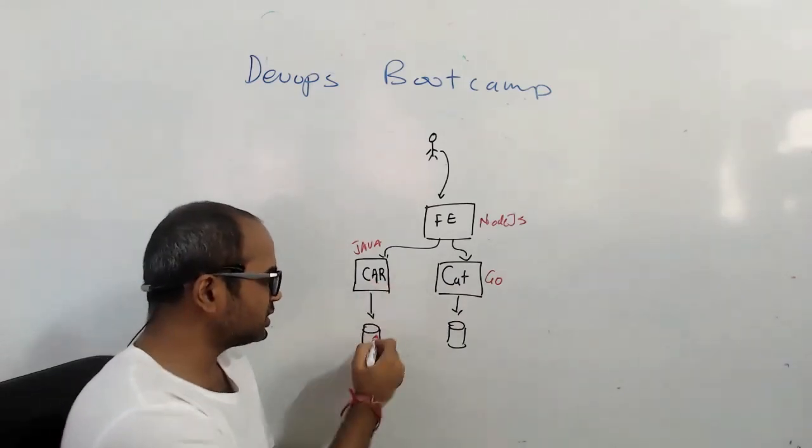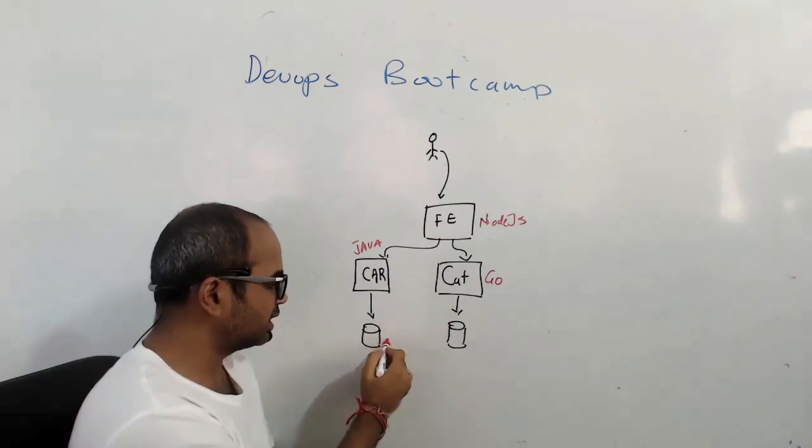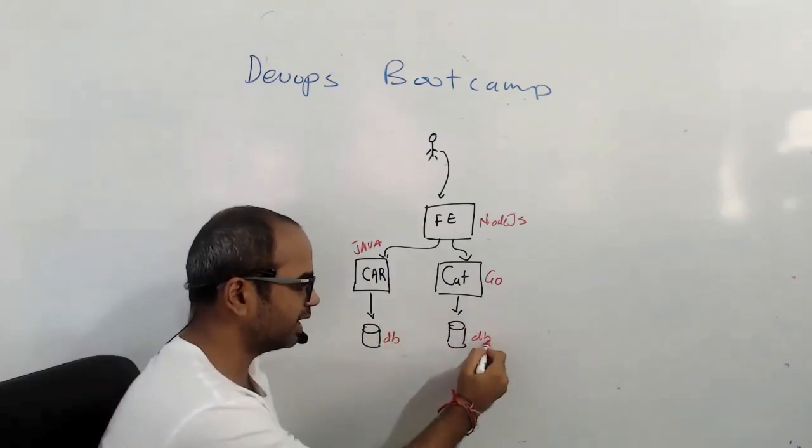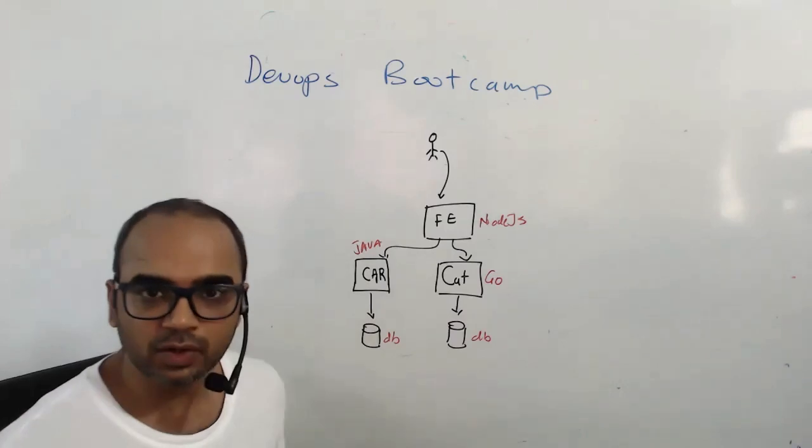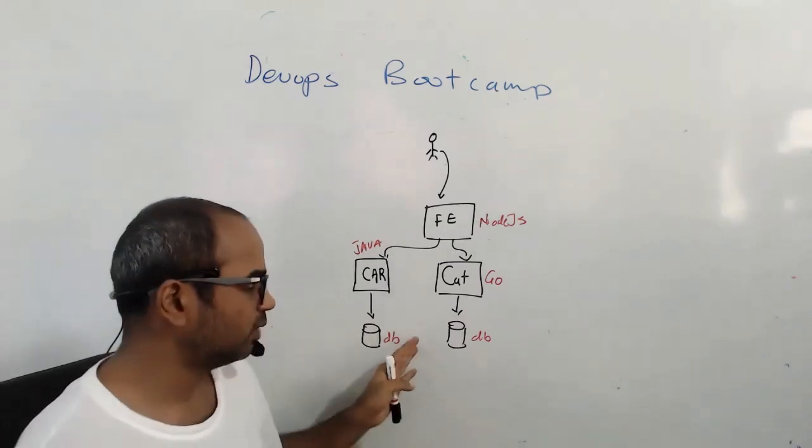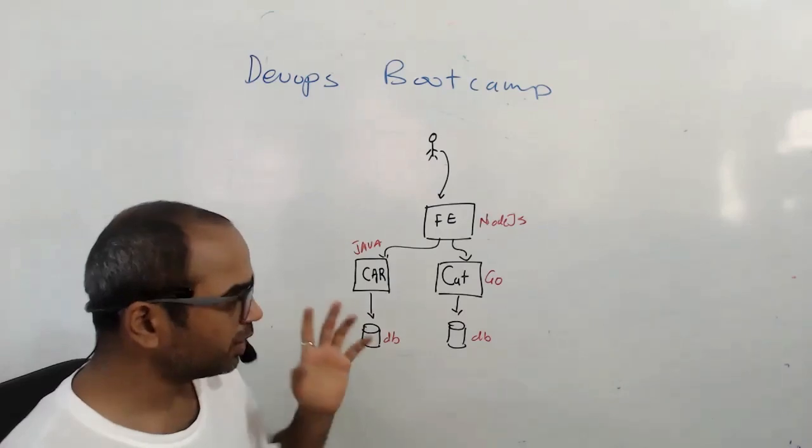And each of these connects to a database. So the cards has a DB, the cards DB. The Golang has a DB, connects to one of these is a NoSQL, one of this is a SQL DB, a relational database. Now, what is your task?